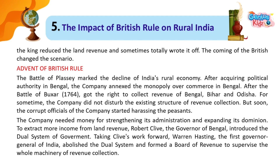For some time, the company did not disturb the existing structure of revenue collection. But soon, the corrupt officials of the company started harassing the peasants. The company needed money for strengthening its administration and expanding its dominion. To extract more income from land revenue, Robert Clive, the Governor of Bengal, introduced the dual system of government.